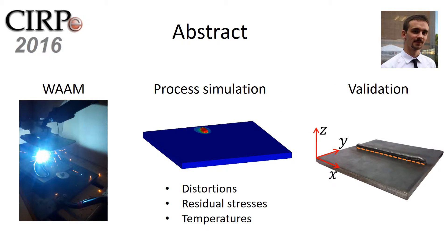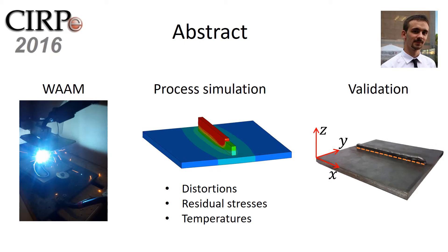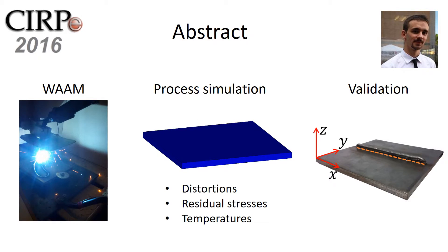Wire Arc Additive Manufacturing is a metal additive manufacturing process based on electric arc welding. It allows building very large parts and achieving high productivity compared with other additive manufacturing technologies. There are some drawbacks in this process — in particular, the components are usually prone to distortions and residual stresses issues.